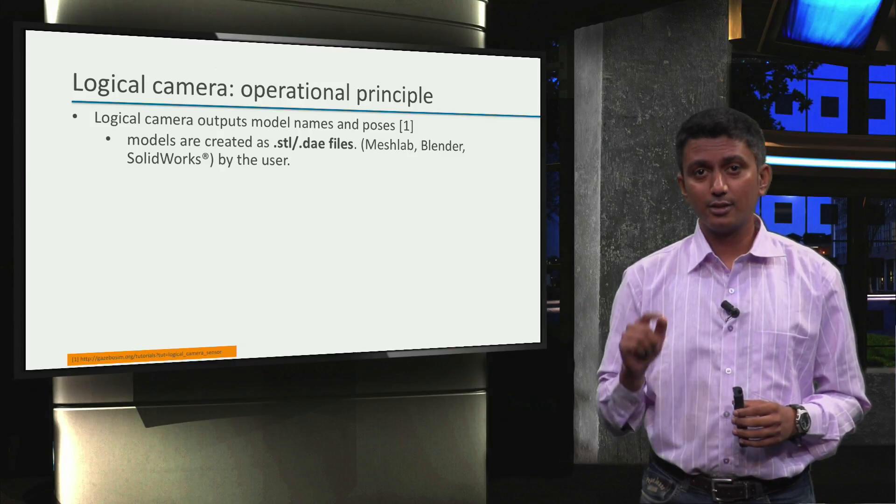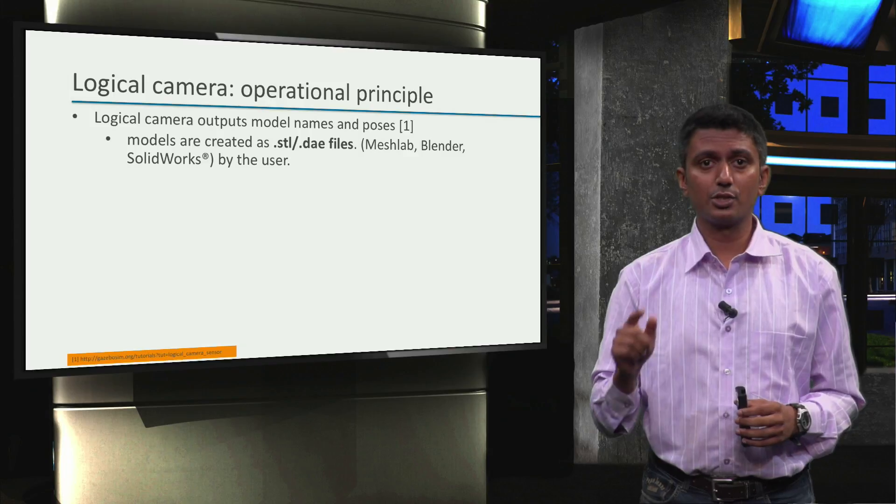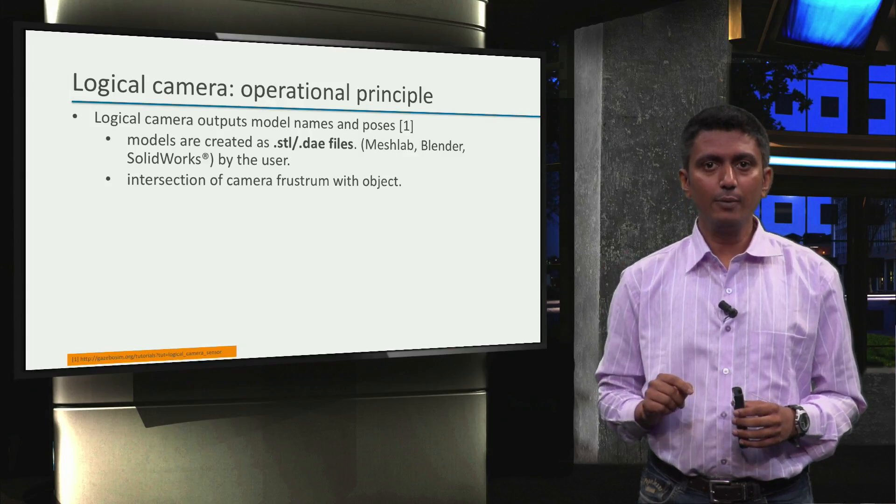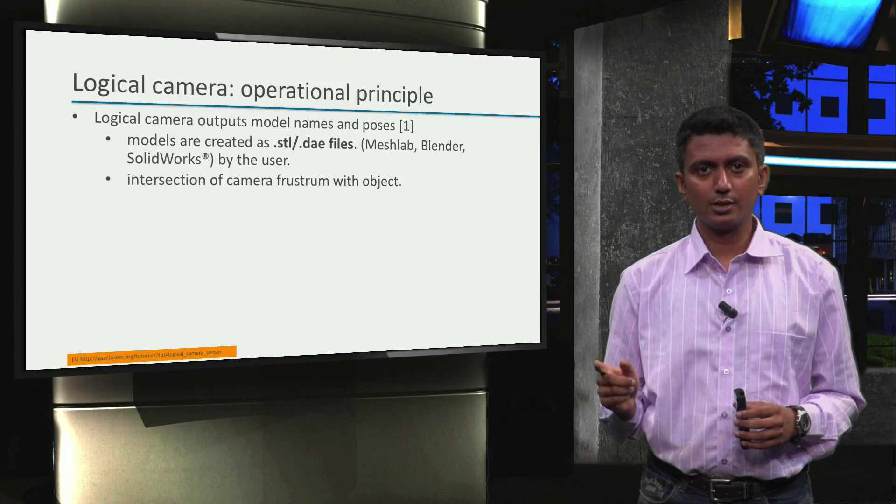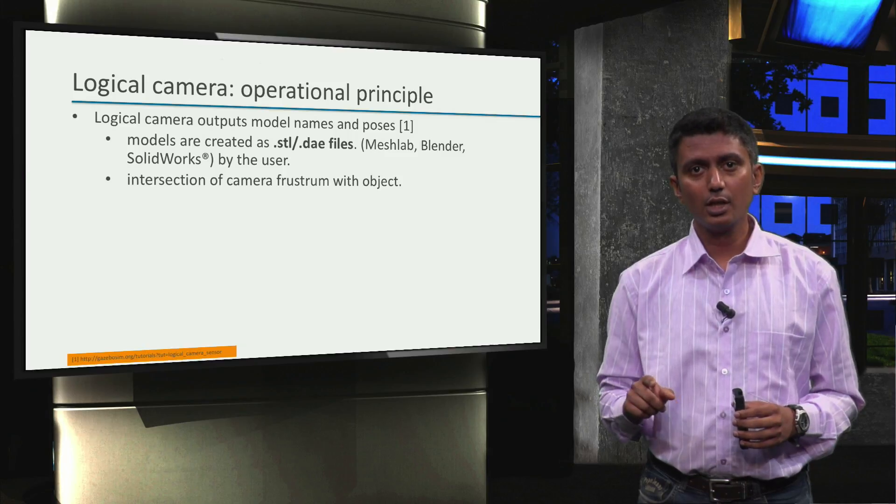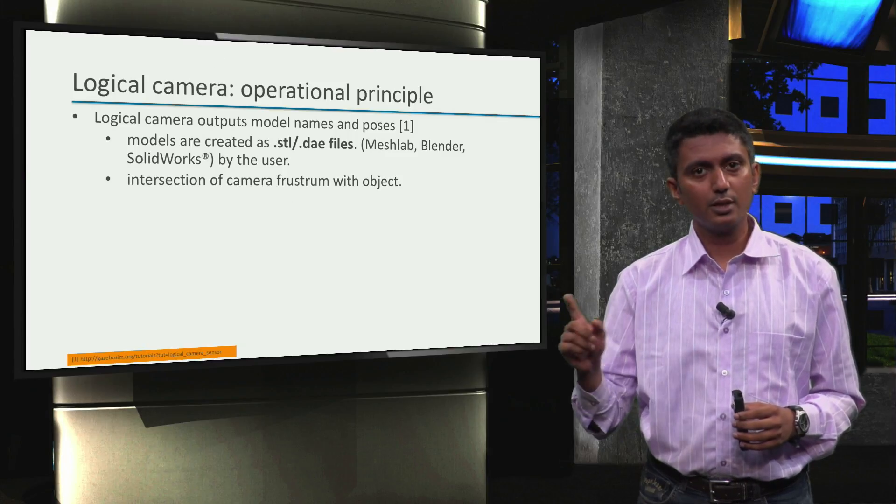What is important is the way the logical camera does its job of giving us the pose. The logical camera detects and recognizes an object that intersects with its frustum and uses the frustum geometry to compute the pose of the object in 3D.